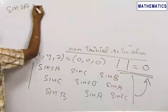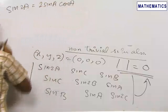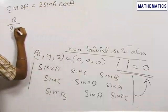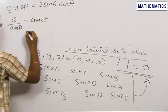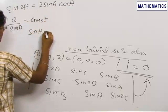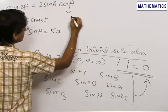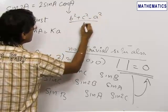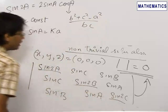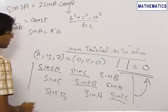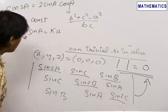Sin 2A can be written as 2 sin A cos A. In a triangle, by the sine rule, a/sin A is a constant k, so sin A = kA and cos A = (B² + C² − A²) / (2BC) by the cosine rule. Similarly, we can write sin 2B, sin 2C, and also sin C = kC and sin B = kB.